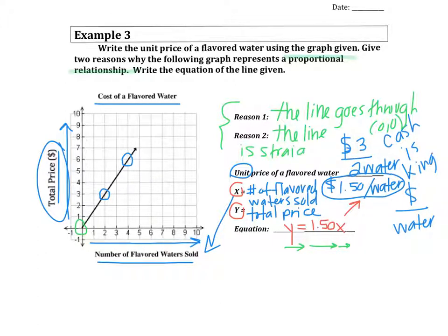Now, how could it not be proportional? Well, one, if the line is not straight. And two, if, let's say, the graph started in a different spot. If it doesn't start at the origin, it is not a proportional relationship.